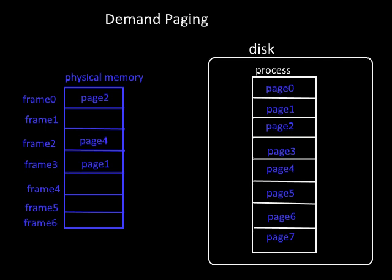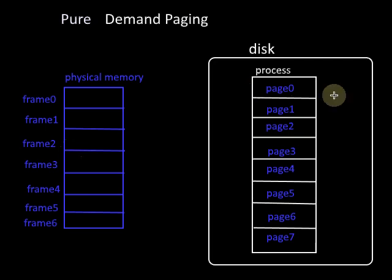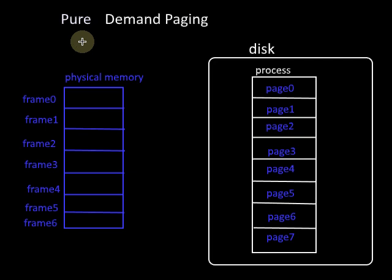We can extend this method to pure demand paging, in which we start execution of the process with no pages of the process in the physical memory. Every page in the process is brought to the physical memory only on demand. This method is called pure demand paging.